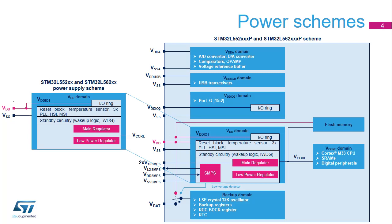V-Core supplies most of the digital peripherals, SRAMs, and flash memory controller. V-DDA voltage supplies the analog peripherals. The VREF+ pin provides the reference voltage to the analog-to-digital and digital-to-analog converters, and is also the output of the internal voltage reference buffer when enabled. The USB transceiver and port G pins 15 down to 2 also have their own independent power domains powered by VDD-USB and VDD-IO2 respectively. A backup battery can be connected to the VBAT pin to supply the backup domain.